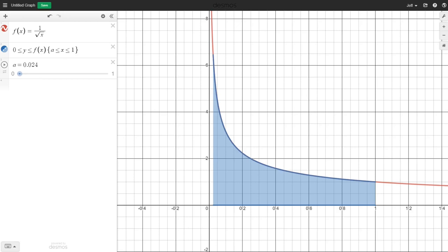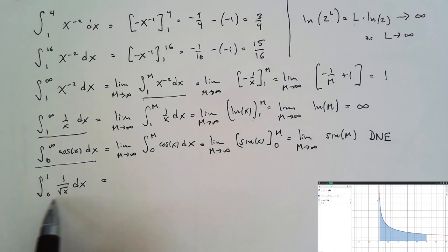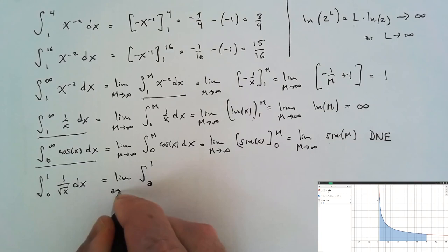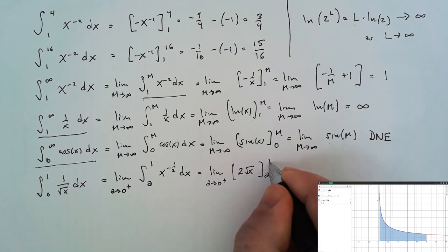We can replace that problematic endpoint with a number a that is slightly bigger than 0 and take the limit as a approaches 0 from positive values. As we now let a approach 0, we get an answer of 2. This improper integral converges to 2.